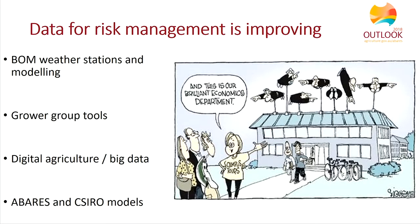One thing that would improve the risk management tools available to farmers is to invest in the underlying data. A key resource is the Bureau of Meteorology — weather forecasts are essential for managing climate risk and BOM data is also used to price weather derivatives. Grower groups provide services such as yield, profit, or production data that allow farmers to make more informed risk-based decisions. And there's a whole range of businesses building digital-based products for farmers, many of which capture vast amounts of data that could potentially be used to price or administer risk management products.